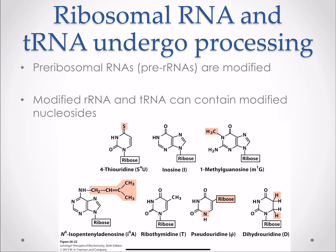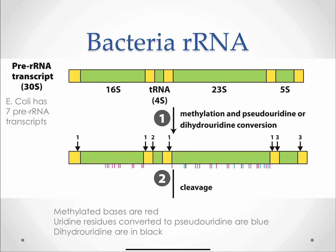With respect to our ribosomal RNAs, our pre-RNAs are modified. Modification of ribosomal RNA and transfer RNA can contain all of these different nucleosides. We can have inosine introduced, a methylguanosine introduced, a thiouridine introduced, and we can have pseudouridine introduced — we'll see that pop up a lot. All of these are potentially possible in our modification of these two RNAs.